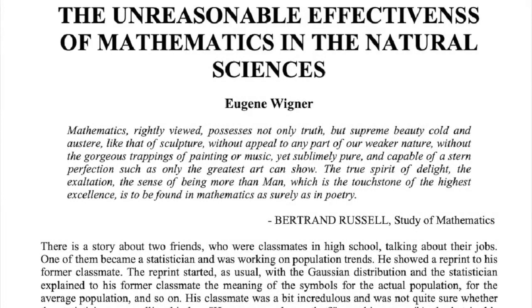In a famous 1960 paper, The Unreasonable Effectiveness of Mathematics in the Physical Sciences, Hungarian-American theoretician Eugene Wigner noted how the mathematical formulation of the physicist's often crude experience leads in an uncanny number of cases to an amazingly accurate description of a large class of phenomena.